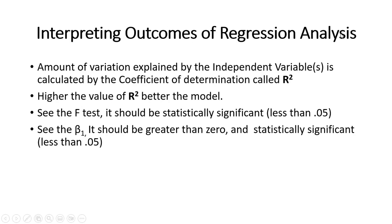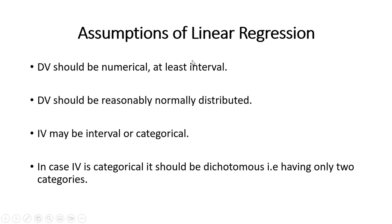When interpreting the outcomes of regression analysis: the amount of variation explained by the independent variables is calculated by the coefficient of determination, called R². A higher R² means a better model. Next we see the F-test — it should be statistically significant. Then we see β₁: it should be greater than zero and statistically significant, meaning its p-value should be less than 0.05, assessed using the t-test.